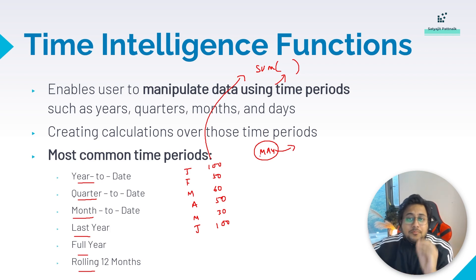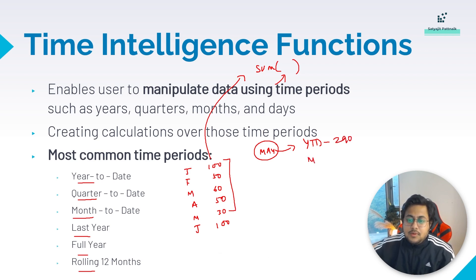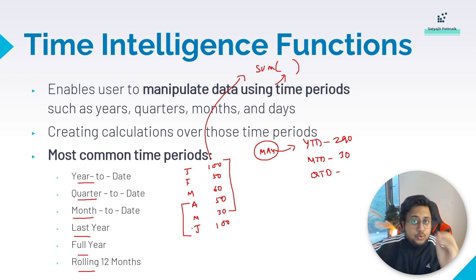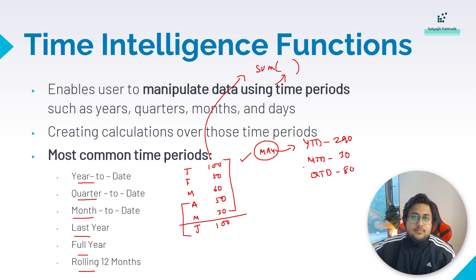If you talk about May, the year-to-date (YTD) values will be the first five records — 290. The month-to-date (MTD) is going to be May's record only, which is 30. The quarter-to-date (QTD): April, May, and June fall under Q2, but the user has selected till May, so June is unseen data — the output will be 80. This is all about time intelligence functions.